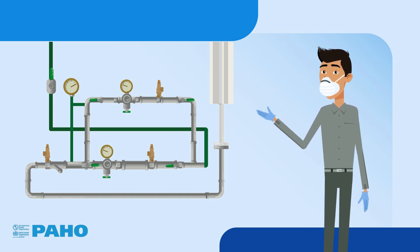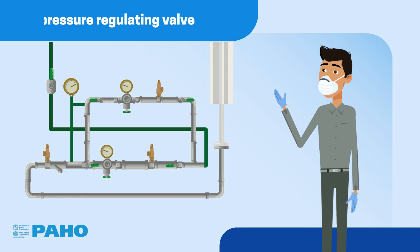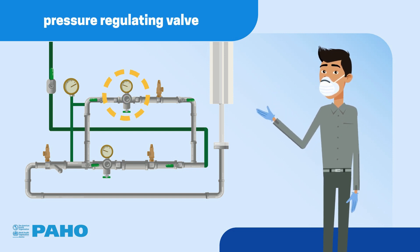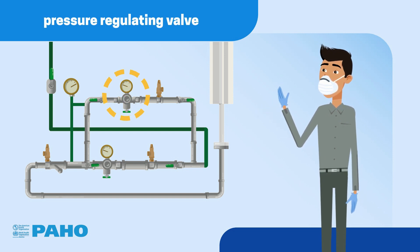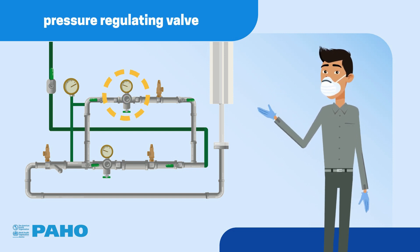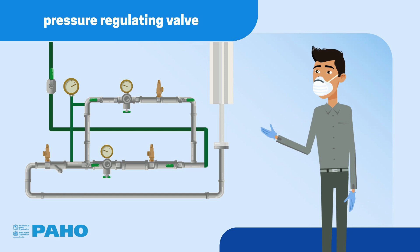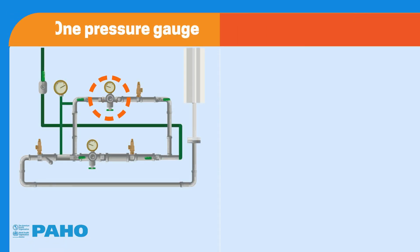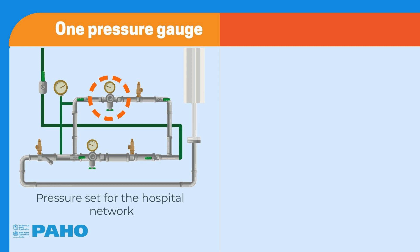To do this, it uses a pressure regulating valve in conjunction with other devices that we will now show you. The regulating valve can have either one or two pressure gauges. When it has one, the gauge indicates the pressure set for the hospital network.